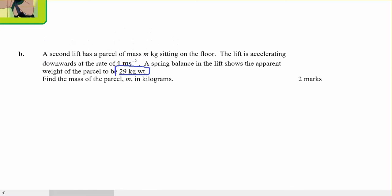And part B. The second lift has a particle M sitting on the floor. The lift accelerates downwards. So here is my particle. There is my M times G. I don't know M. It's accelerating downwards at a rate of four meters per second squared, and I've got a normal reactive force.